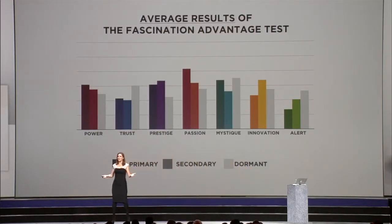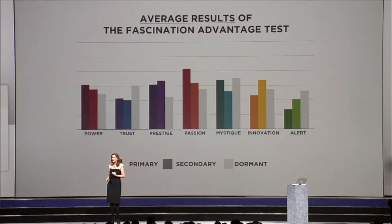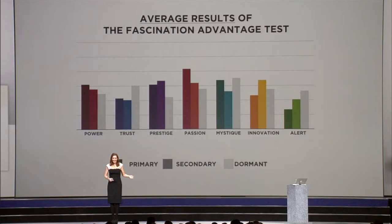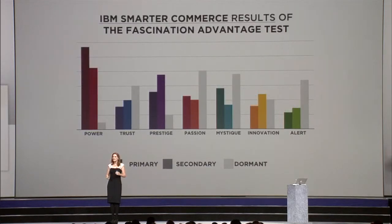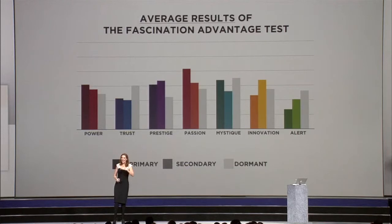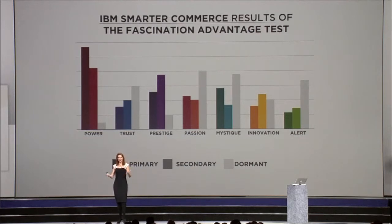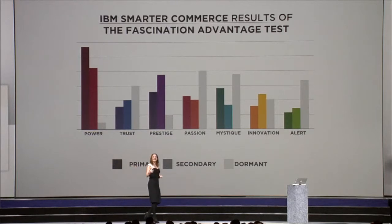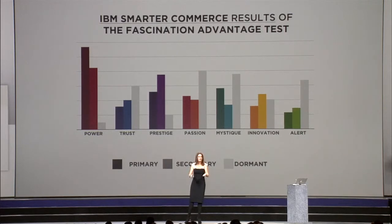This is the average result. Look at the red bar behind me — that's primary power. It's the average result of a quarter of a million people we've assessed. Now I'm going to show you your result. You were 115% more likely than the average population to have power as your primary advantage — no surprise, we got a bunch of overachievers in the room, but you even overachieved on overachieving.